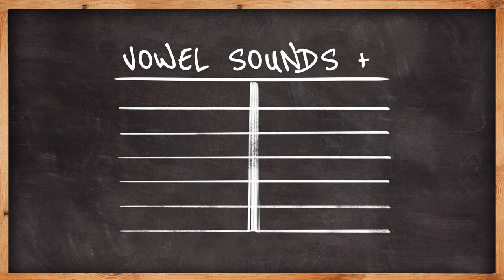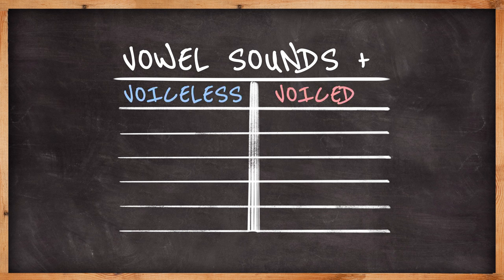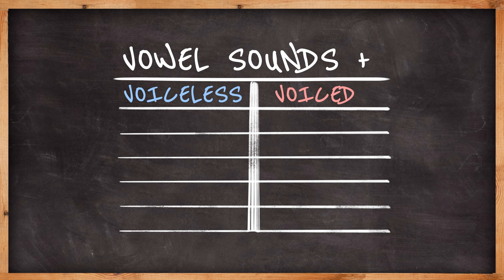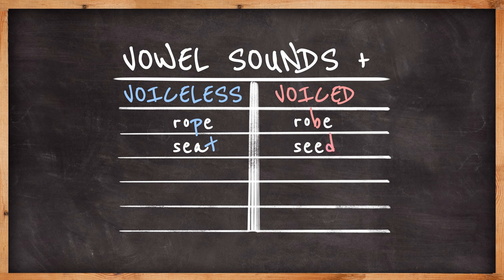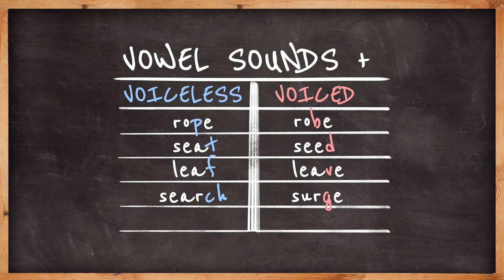Something very interesting happens when voiceless consonants appear after vowel sounds. The vowel sound is shortened. Compare, rope, robe, seat, seed, leaf, leave, search, surge, and our first example, loose, lose.